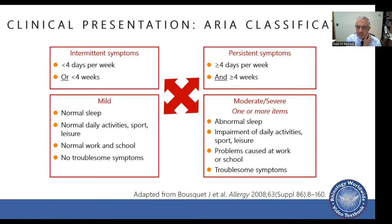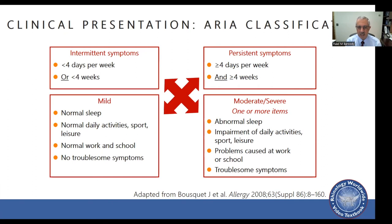There are a couple of classifications. The ARIA classification — Allergic Rhinitis and its Impact on Asthma — uses intermittent and persistent categories. Intermittent means symptoms fewer than four days per week or fewer than four weeks a year; persistent means four or more days per week and more than four weeks a year. Severity is categorized as mild — with normal sleep, daily activities, work, and school — or moderate to severe, which includes abnormal sleep, impairment of daily activities, and troublesome symptoms.